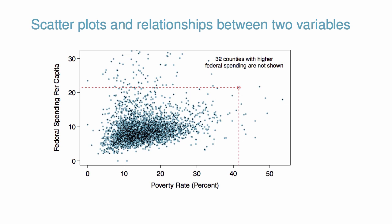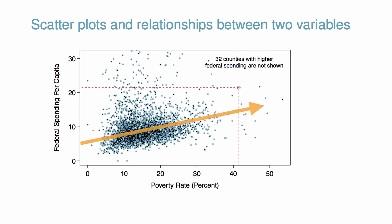Each point in the scatterplot represents a single county. For instance, the highlighted dot corresponds to county 1088 in the county dataset, Owsley County, Kentucky, which had a poverty rate of 41.5% and federal spending of $21.50 per capita. The scatterplot suggests a relationship between the two variables: counties with a high poverty rate also tend to have slightly more federal spending. We might brainstorm as to why this relationship exists, and investigate each idea to determine which is the most reasonable explanation.